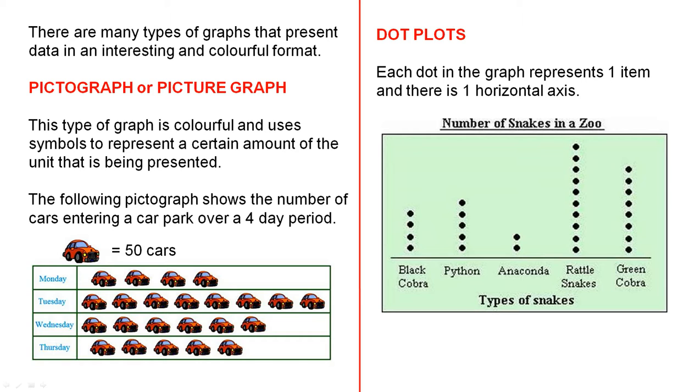The following pictograph shows the number of cars entering a car park over a four day period. So the four days are Monday, Tuesday, Wednesday, Thursday and here are the number of cars. Now what does each symbol mean? Well from here each symbol represents 50 cars.